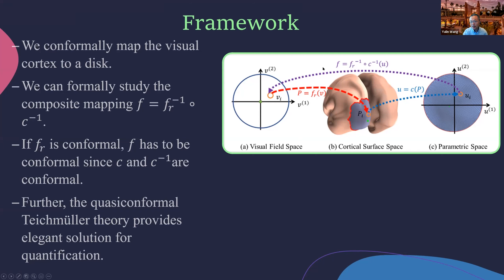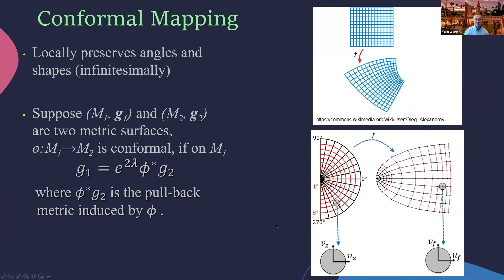The idea is that we study f, compute the Beltrami coefficient map, and use it to quantify the matching. The first question we ask is whether the human retinotopic mapping is conformal. Following that, we use the Beltrami coefficient map to do smoothing, registration, and even improve the PRF model. Here is some background that I have repeated many times, mainly on the anatomical research side.